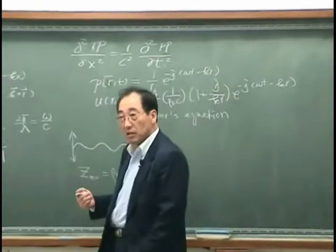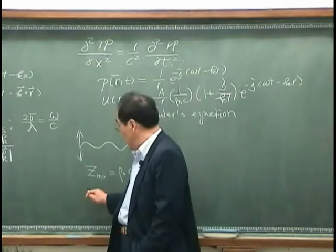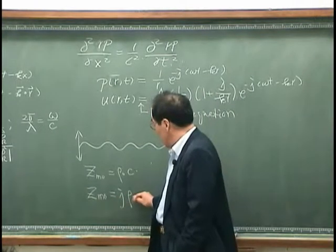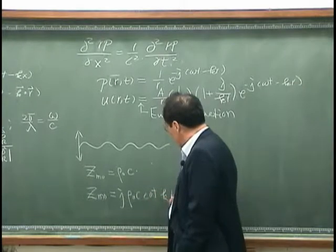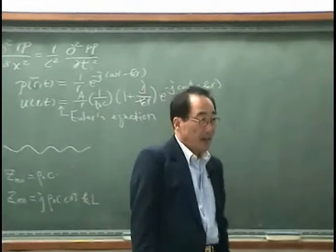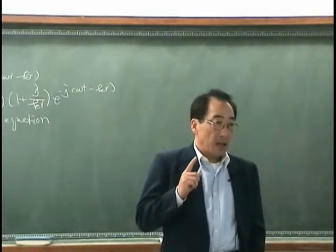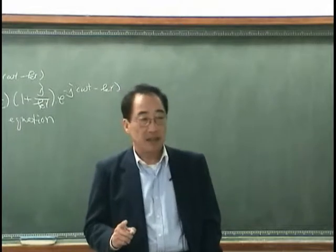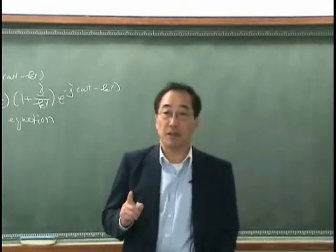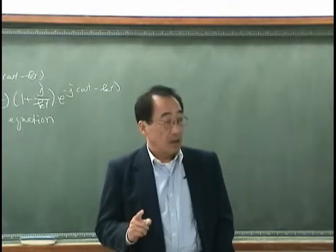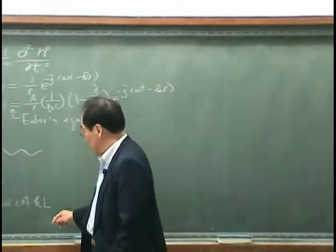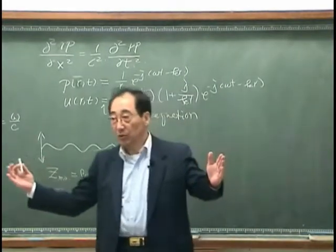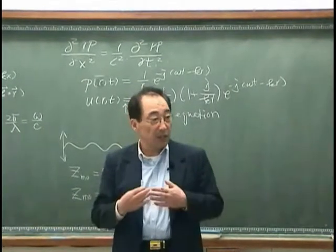We studied the physical meaning of this impedance for the finite string case. That was j times rho_0 c times cotangent(kL), where L is the length of the system. For the finite system case, the driving point impedance does not have a real part — it only has an imaginary part — so the pressure and velocity have a phase difference.